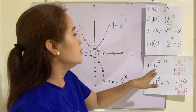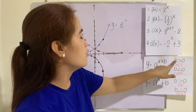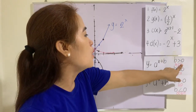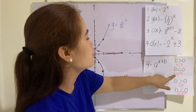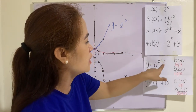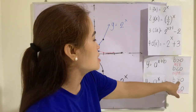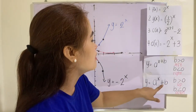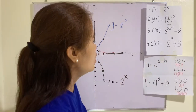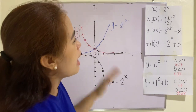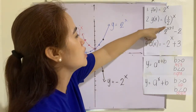It says here y is equal to a raised to x plus b. If b is greater than zero, you have to move to the left. If b is less than zero, you have to move to the right. We are referring to this: y is equal to a raised to x plus b. If b is greater than zero, you have to move up. If b is less than zero, you have to move down. So always graph the base function. The base function is 2 raised to x.